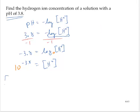So then the H plus concentration is equal to 1.58 times 10 to the negative 4th power.